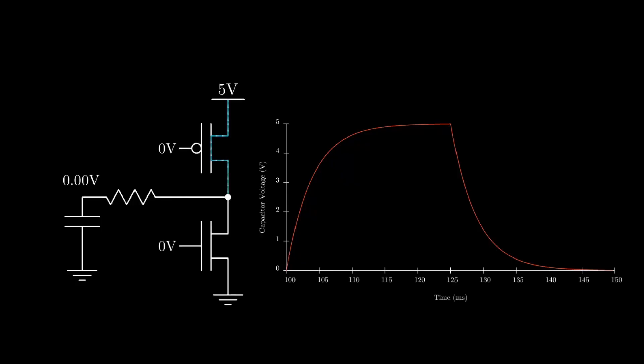Instead we can pull the voltage up and down using transistors. In this configuration when we apply zero volts to the gates of both transistors, the PFET on the top will turn on connecting the capacitor to 5 volts and the NFET on the bottom will turn off disconnecting the capacitor from ground. If we apply 5 volts to both gates the opposite will happen, and so we have the same behavior as the switch but now voltage controlled.